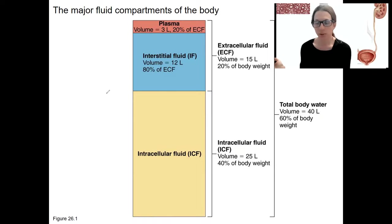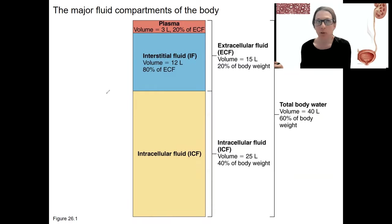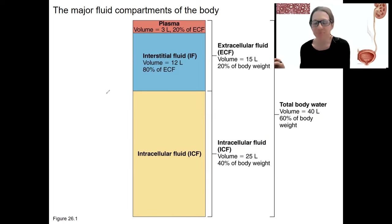This week we are moving on to chapter 26, which is about fluid balance and electrolyte balance. We're also wrapping up the chapter on urinary, because these overlap quite a bit. The urinary system plays a big role in fluid balance and electrolyte balance, so we're going to do these together.